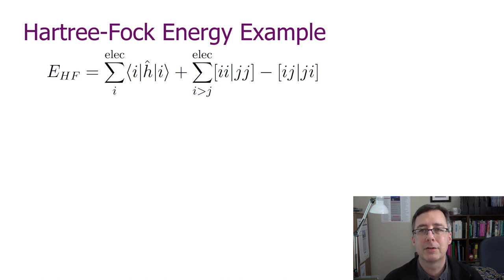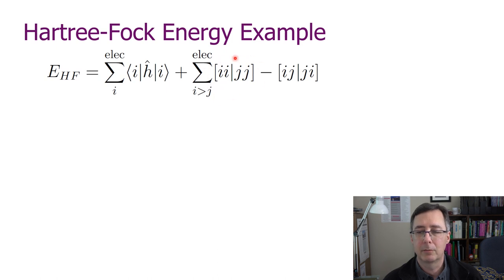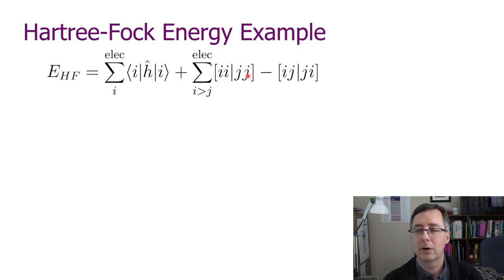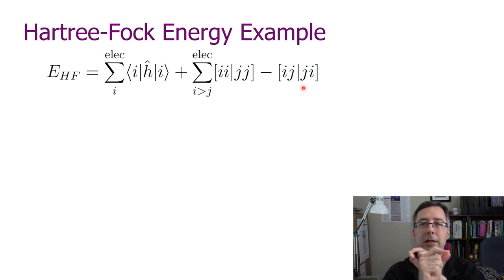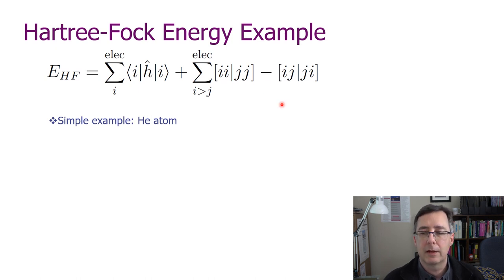Coming back to our expression: here's your Hartree-Fock energy. The one-electron term covers electron kinetic energy and electron-nuclear attraction. The two-electron term covers electron-electron repulsion. The Coulomb term iijj makes good physical sense—it really is Coulomb repulsion between an electron in spin orbital i and one in spin orbital j. The exchange term ijji is kind of a mathematical artifact accounting for the interchangeability and anti-symmetry of electrons in quantum mechanics. Writing that symbolically is a very easy exercise.